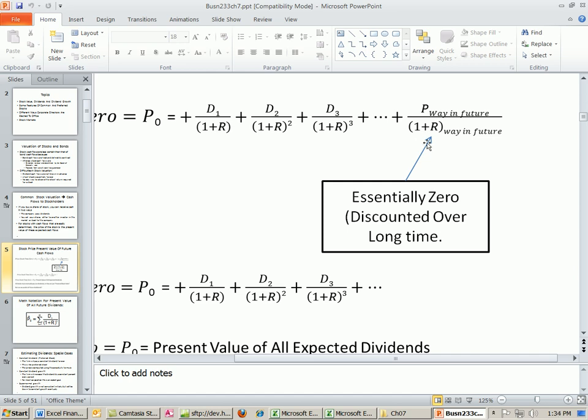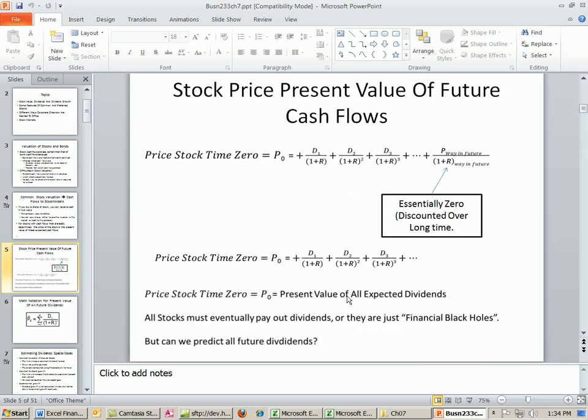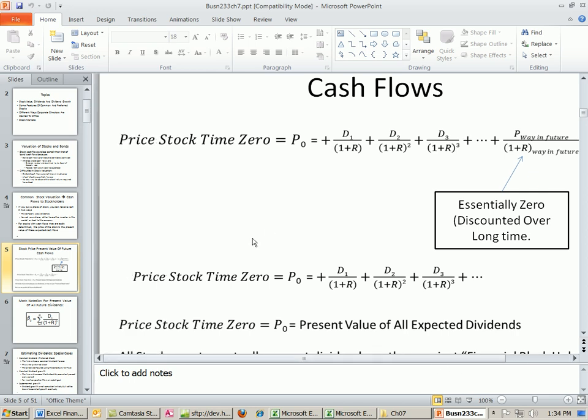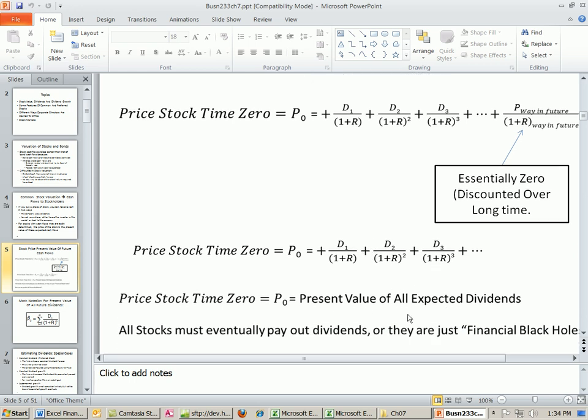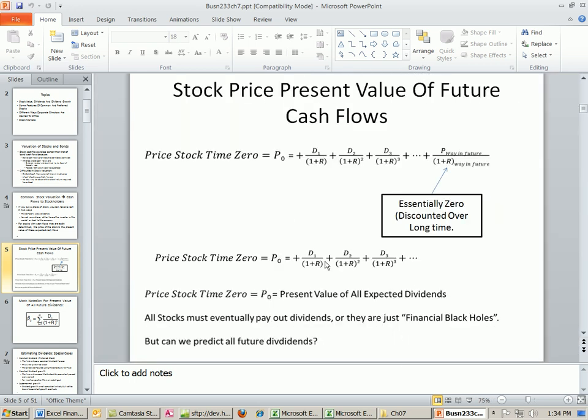So in developing a model, a math model, to calculate present value of future cash flows for a stock, they assume that at some point, this is going to be way, way in the future. And when you're discounted back, it gets close to 0. So what they say is, then the model gets reduced down to just this, the price of the stock at time 0 is just all of the future dividends discounted back. So that's the concept here.